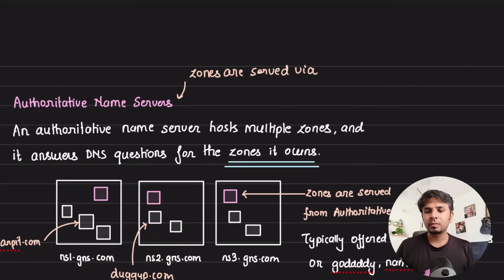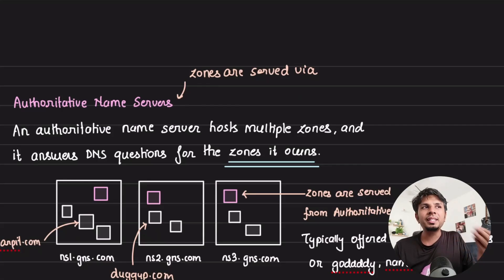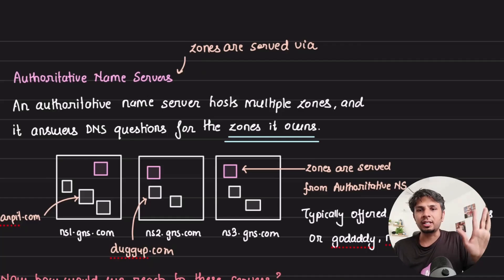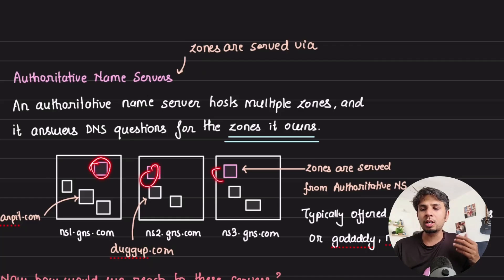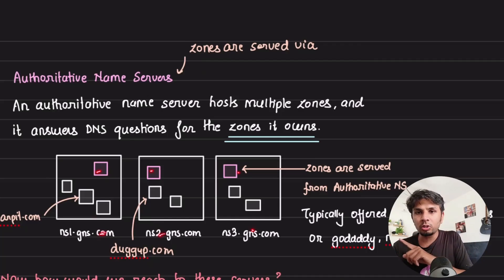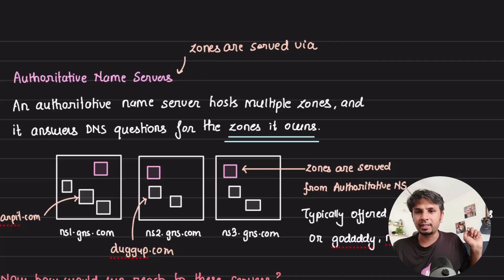Since a DNS zone is a logical entity, the mappings need to be served from some server. These servers are called authoritative name servers. Their responsibility is simple: given a request for a zone they own, they respond with the record against it. For example, three name servers might be responsible for the google.com zone, and when a request comes in, they read the key-value pair and send it back.